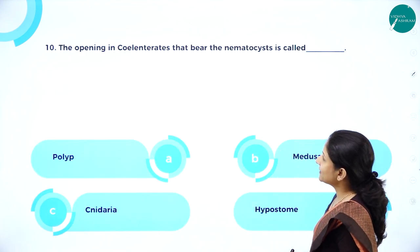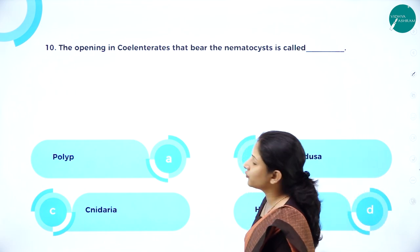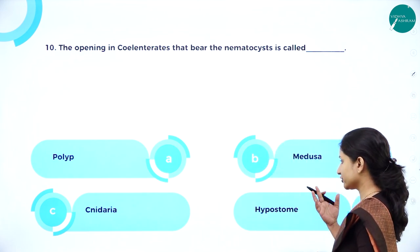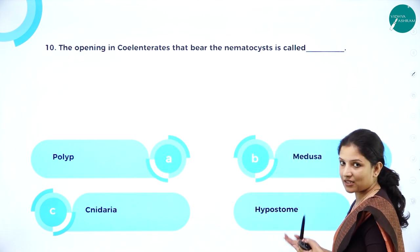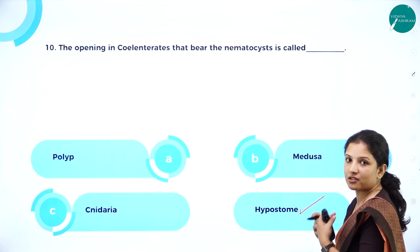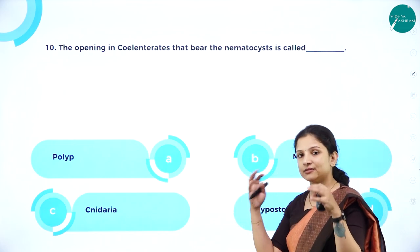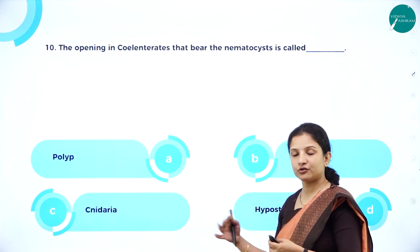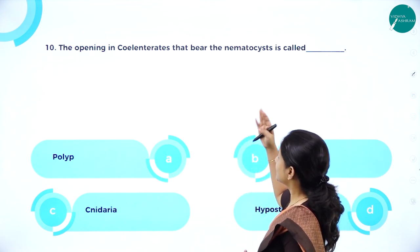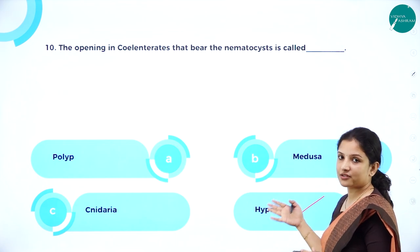Tenth MCQ: the opening in coelenterates that bears the nematocysts is called — polyp, medusa, nidaria, or hypostome? Polyp and medusa are body forms; nidaria is the phylum name. The answer is hypostome, because the hypostome is the opening present in the mouth region from where tentacles arise, and it is in these tentacles that the nematocysts or nidoblasts are present.